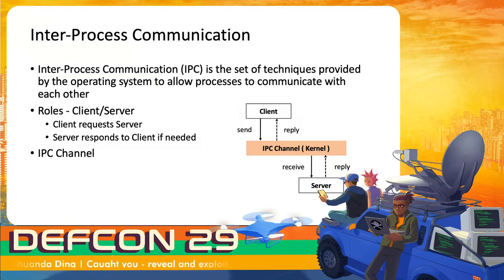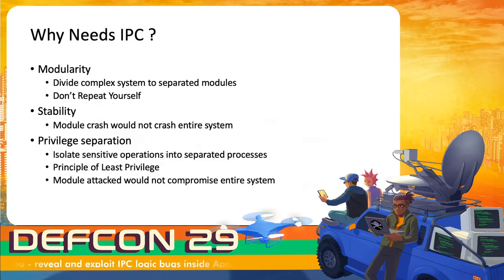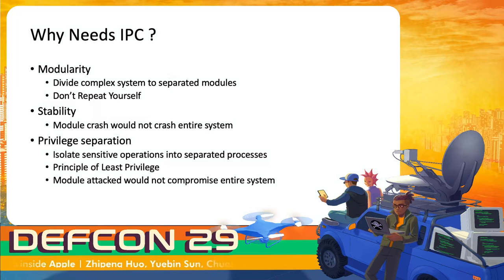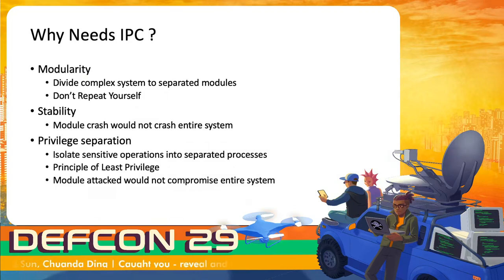The OS kernel provides the IPC channel to allow client and server processes to send or reply to messages. There are three advantages IPC provides. First, modularity — modern software is more complex, and with IPC, developers can divide a complex system into separated modules, reducing complexity and avoiding reinventing the wheel. Second, stability — if all data and code are inside one process, a little error could crash the entire system. By dividing into modules, a module crash would not crash the entire system.